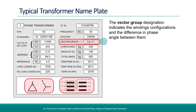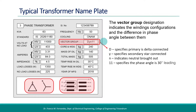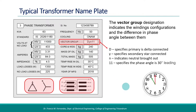What is the meaning of dyn11? The uppercase letter D specifies the primary is delta connected. Then the lowercase letter Y specifies star connection in the secondary. N indicates that the neutral terminal is available. And the number 11 specifies that the phase difference is 30 degrees leading. The number 11 corresponds to the hand position of 11 o'clock on the clock dial, and the angle between the clock hands is 30 degrees. Continue to watch this video to see how the phase shift occurs in three-phase transformers, in commonly available vector groups, and how we can identify it from the nameplate details.